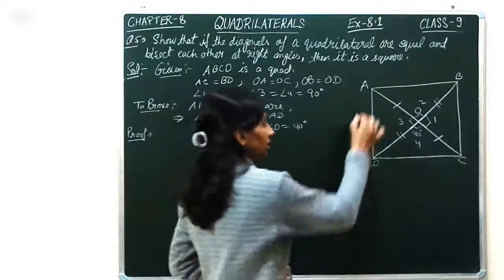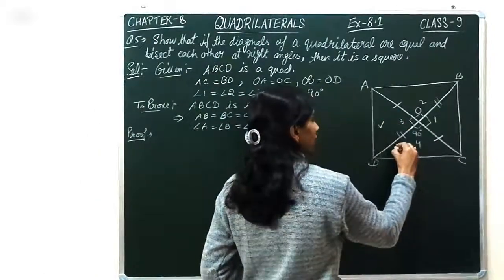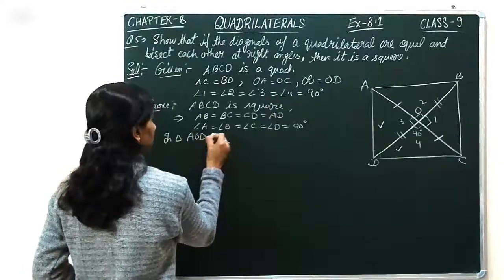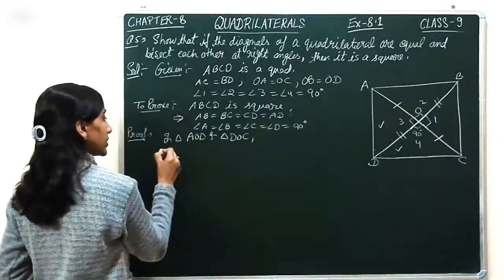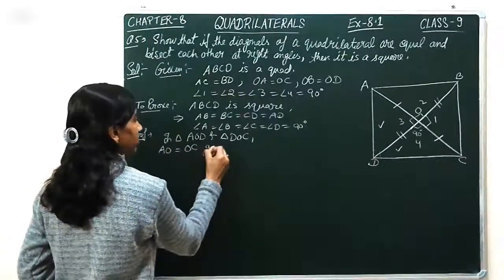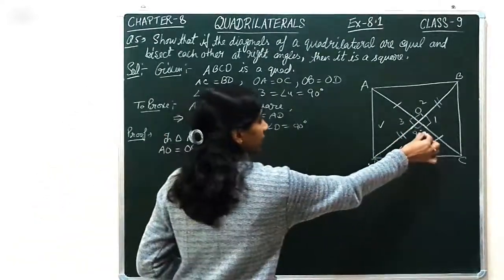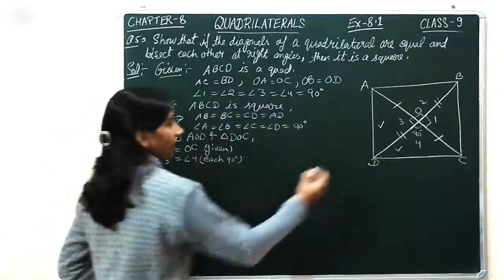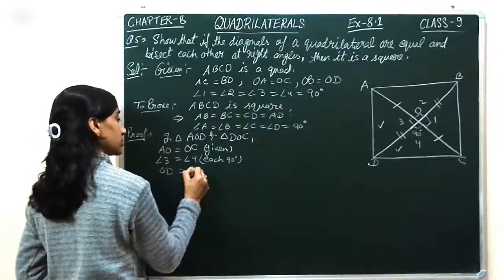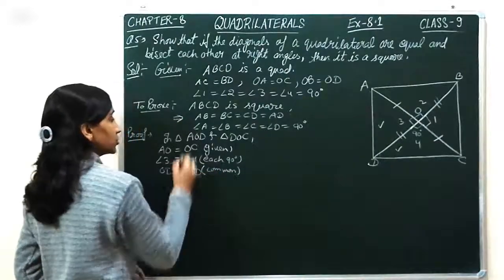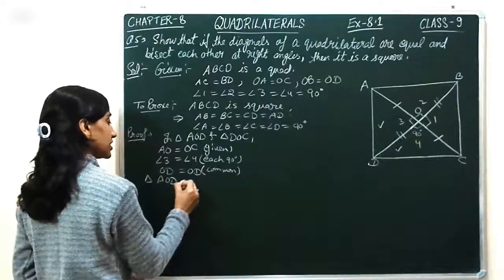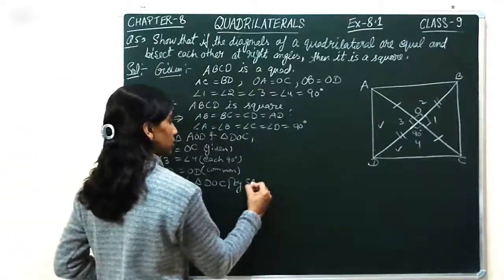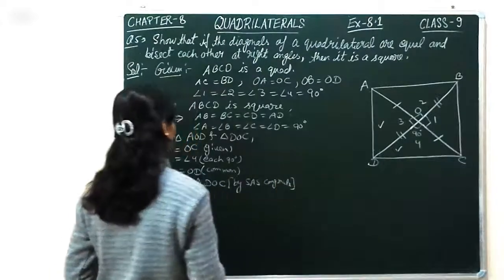First we have to prove triangles AOD and DOC are congruent. In triangle AOD and triangle DOC: AO is equal to OC (diagonals bisect each other), angle 3 and angle 4 are each 90 degrees (diagonals intersect at right angles), and OD is equal to OD (common side). So triangle AOD is congruent to triangle DOC by the Side-Angle-Side congruence rule.